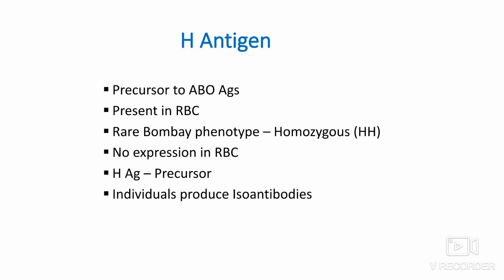It is very essential to know about the H antigen. H antigen is the precursor to the ABO blood group antigens and is present in all RBCs irrespective of ABO system. Persons with the rare Bombay phenotype are homozygous for the H gene, meaning they do not express H antigen on their RBCs. As H antigen acts as a precursor, its absence means absence of antigens A and B. However, these individuals produce isoantibodies to H antigen as well as to antigens A and B.